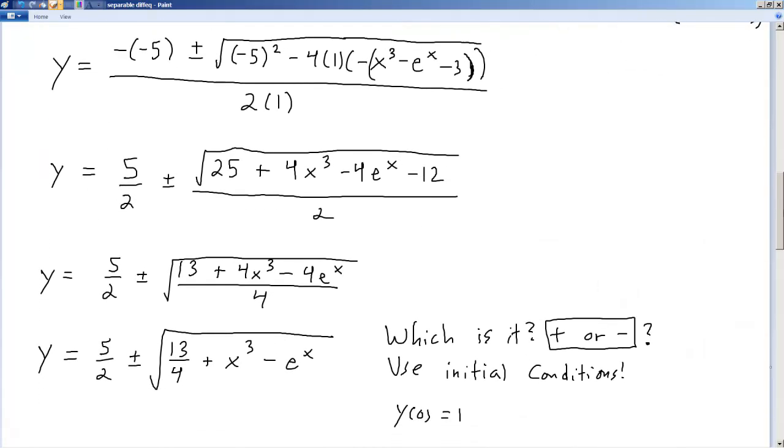So I put this into the quadratic formula. I fill it in carefully. I do a little bit of simplification on top. I'll then do a little bit more algebra. I'll incorporate this 2 into the square root by squaring it, and then I've got a simplified form over here. I've got y equals 5 over 2 plus minus the square root of 13 over 4 plus x cubed minus e to the x.